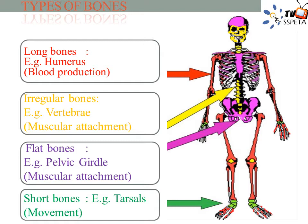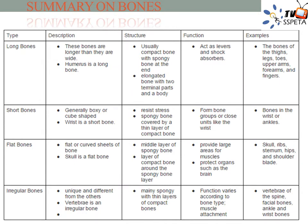Short Bones — short bones are roughly cube-shaped with vertical and horizontal dimensions approximately equal. They consist primarily of spongy bone covered by a thin layer of compact bone. Short bones include the bones of the wrist and ankle. The diagram below shows a summary of all you need to know about bones.